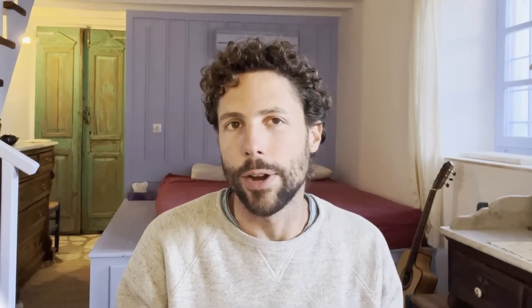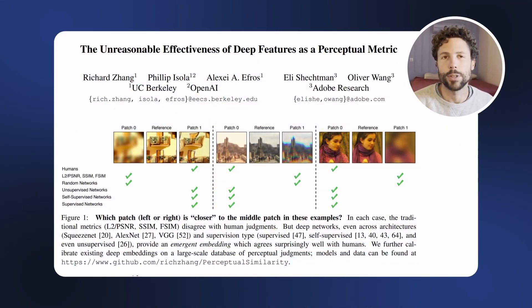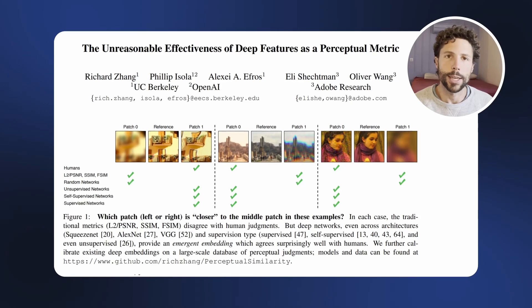A fixed algorithmic approach might work well for specific kinds of sounds — like MP3, which is optimized for music — but can struggle with other types of sounds. Neural network-based methods, however, offer the flexibility to adapt dynamically to diverse audio types, preserving quality across different contexts.